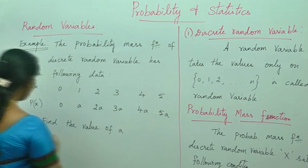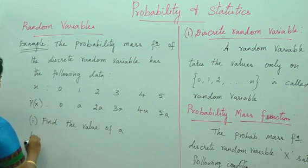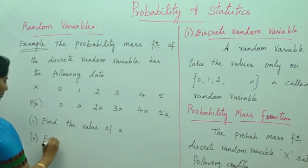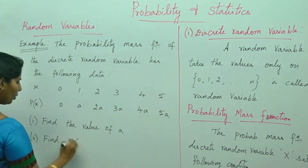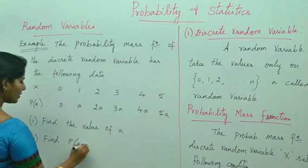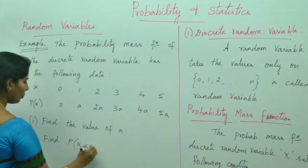The two sub-questions are: number 1, find the value of a; number 2, find p of x less than 4.